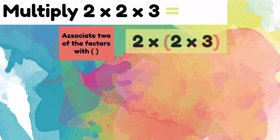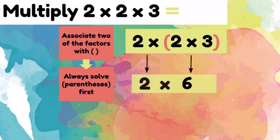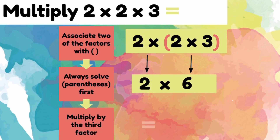Let's go ahead and associate the 2 and the 3. We will solve parentheses first. 2 times 3 equals 6. Let's bring down the 2 times. Let's multiply by our third factor, which was the 2 that we left at first. 2 times 6 equals 12, so 2 times 2 times 3 equals 12.